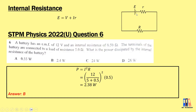Let's look at a question from the 2022 past year paper. A battery has an EMF of 12V and internal resistance of 0.5 ohm. The terminals of the battery are connected to a load of 5 ohm. What is the power dissipated by the internal resistance of the battery? The power equals I squared times R. You can use this formula or other formulas as well.